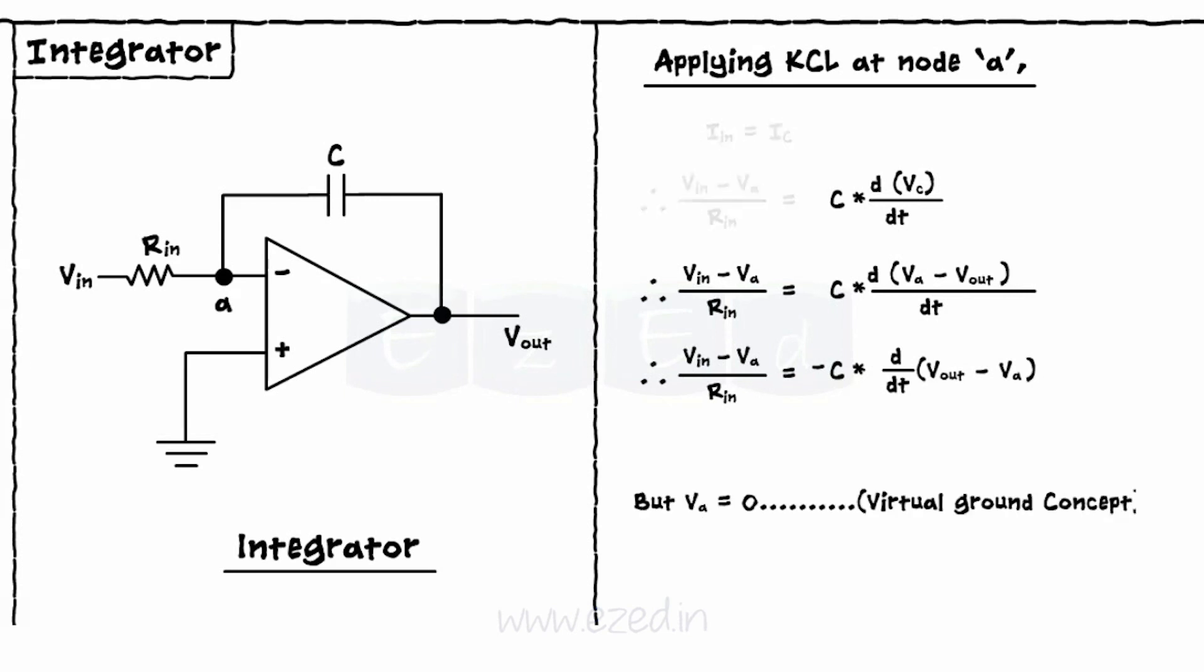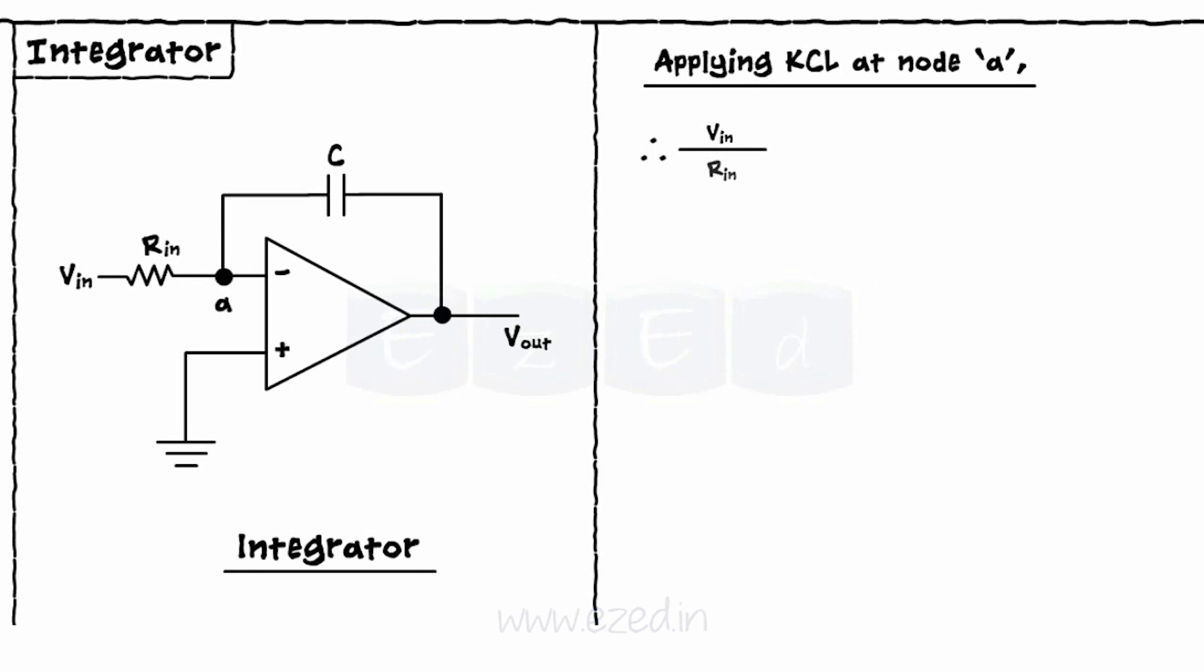But VA equals 0. Thus, Vin by Rin equals minus d by dT of Vout.